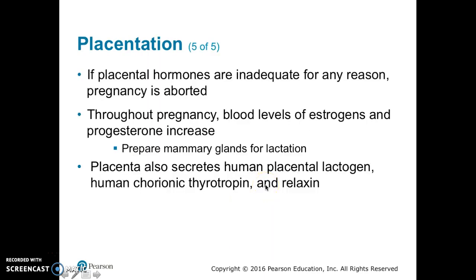If the placental hormones are inadequate for any reason, the pregnancy is aborted. Throughout pregnancy, blood levels of estrogens and progesterone increase, which prepares the mammary glands for lactation. The placenta also secretes human placental lactogen, human chorionic thyrotropin, and relaxin.